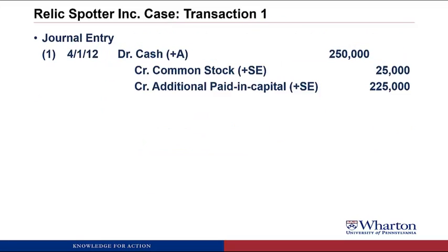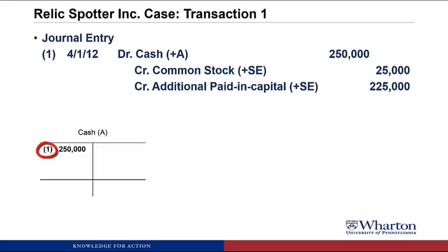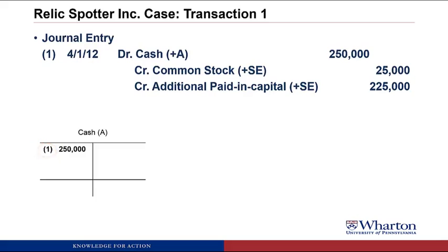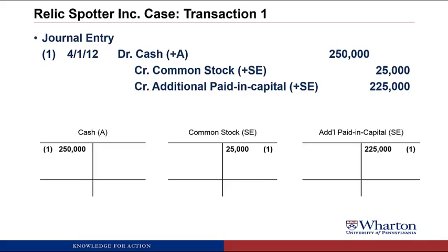You can have more than one credit and/or more than one debit in a journal entry. As we talked about, the only requirement is that your debits equal your credits. After we do the journal entry, we need to post these amounts to T-accounts where we can keep a running total of the balance in each account. We create a T-account for cash, put the $250,000 on the debit or left-hand side with a little '1' to trace it back to the original journal entry. We create similar T-accounts for common stock and additional paid-in capital, with balances on the credit side.